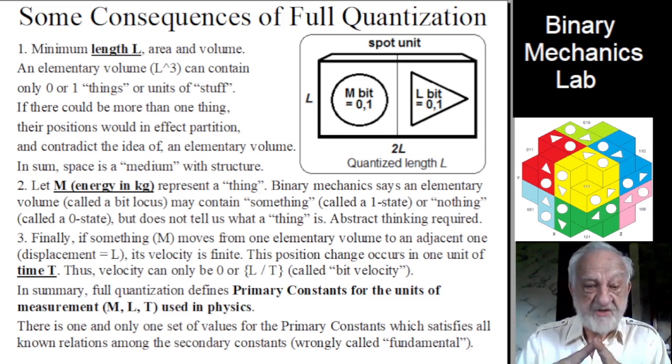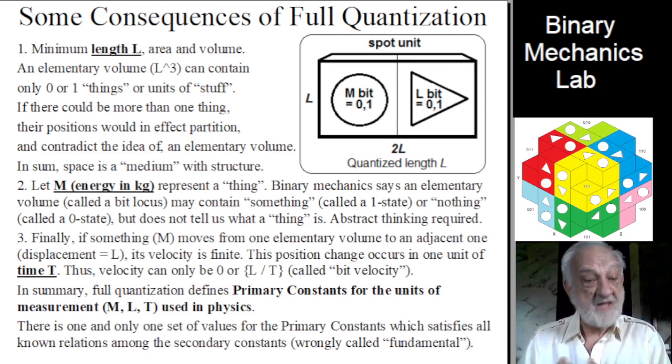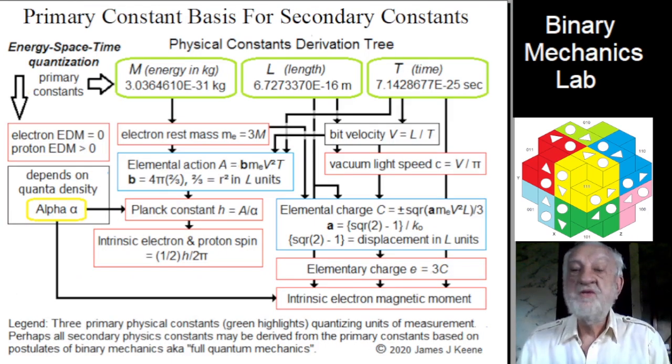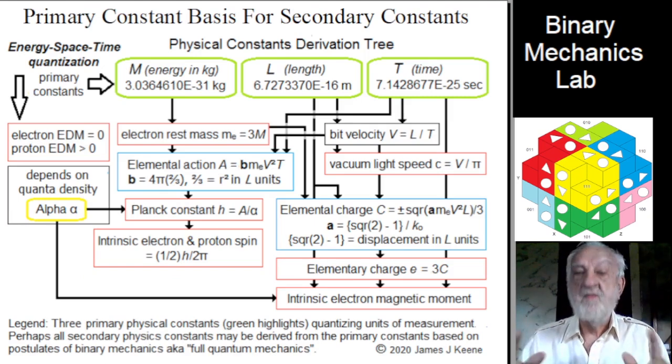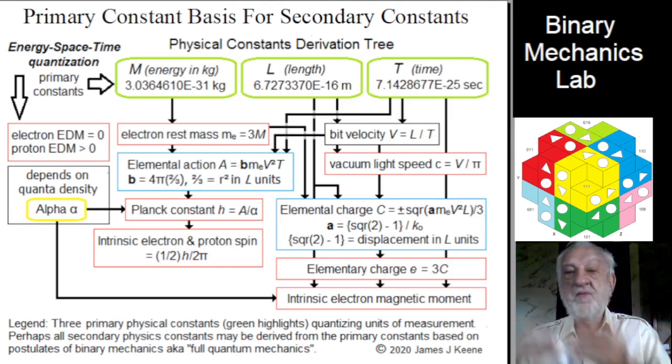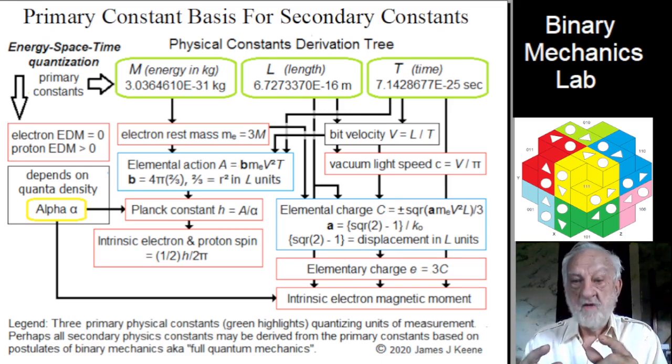In summary, full quantization defines primary constants for the units of measurement, M, L, and T, used in physics. There is one and only one set of values for the three primary constants, M, L, and T.